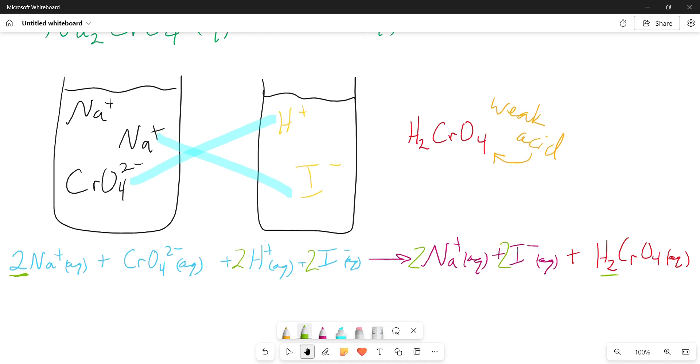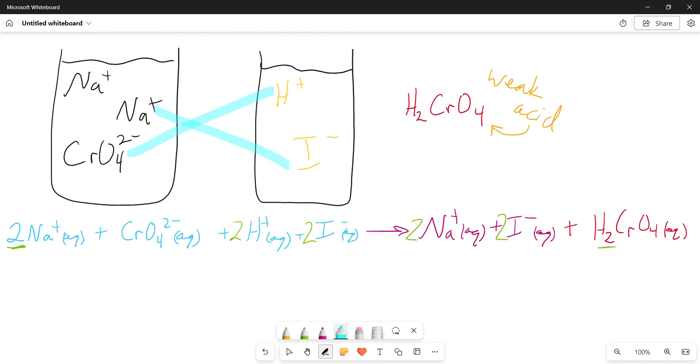Now I can go through and cross off all of my spectator ions. Let's do that. So two sodiums, that goes away. Two iodides, that goes away.